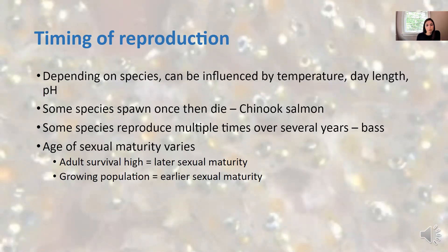Timing of reproduction, depending on the species of fish, is influenced by different factors. It could be temperature, day length, or pH of the water. There are some species that spawn once and then die, like the chinook salmon. What is the adaptive advantage there?